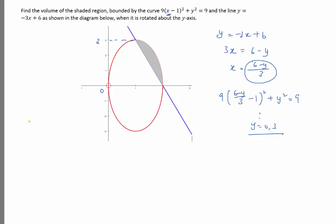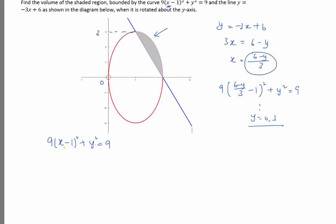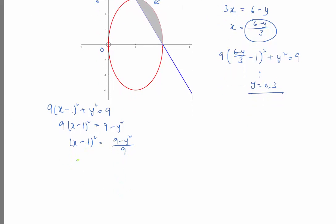Now we need to find the volume bounded by the red curve. Since we're rotating about the y-axis, we make x² the subject. To make x² the subject, it's not straightforward. We divide throughout by 9, but this gives (x - 1)², so we need to square root first. Taking square roots of both sides: x - 1 = ± √(...), so x = 1 ± √(...).